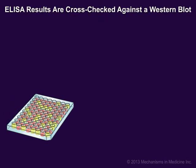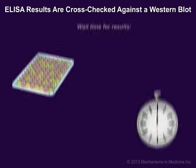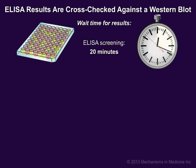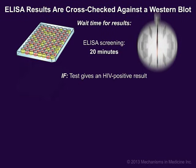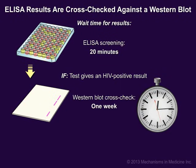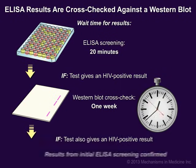Recent advances in research have noticeably cut the waiting time needed to return ELISA results to your doctor. Older tests used to take days or weeks, but newer procedures can now be done in 20 minutes. Any ELISA results indicating that you are positive for HIV will then need to be cross-checked against a Western blot test in order to confirm the findings.